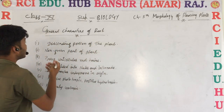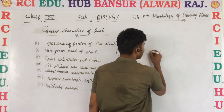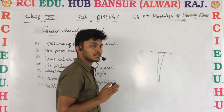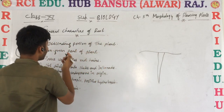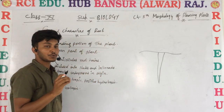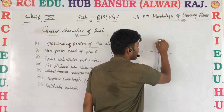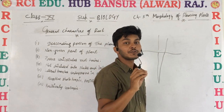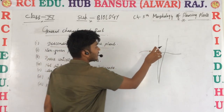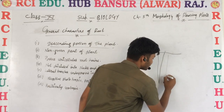Today we are talking about the general characteristics of root. The root is in the descending position of the plant. It is the part of the plant that is not moving upward — it is moving downward. This part is known as the root.